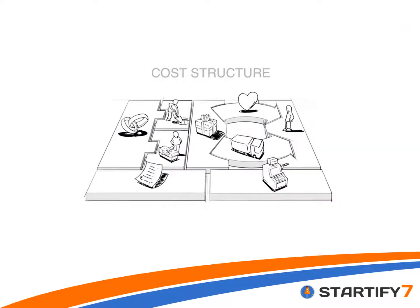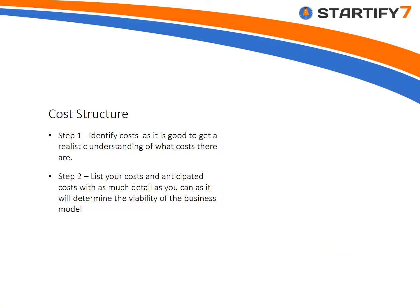The final part of the jigsaw is thinking about the cost structure, which brings the picture together. It's important to have a realistic understanding of what costs the business is likely to incur — many of which relate to other dimensions of the business model canvas. Start by listing the costs you think you'll incur and what you anticipate they'll be. This can really determine the viability of the business model from the outset. If this doesn't stack up with the revenue stream and other elements of the canvas, then we need to re-explore how we can change, adapt, and potentially pivot the business to make it more viable.